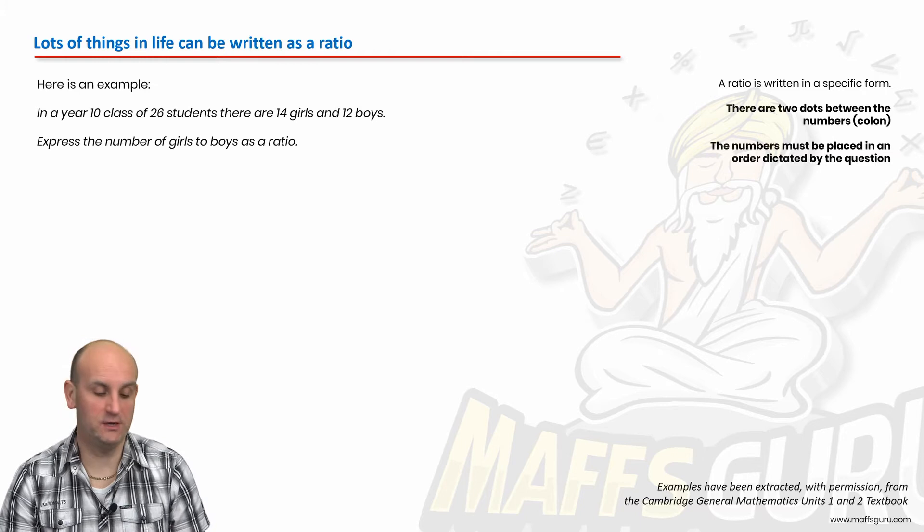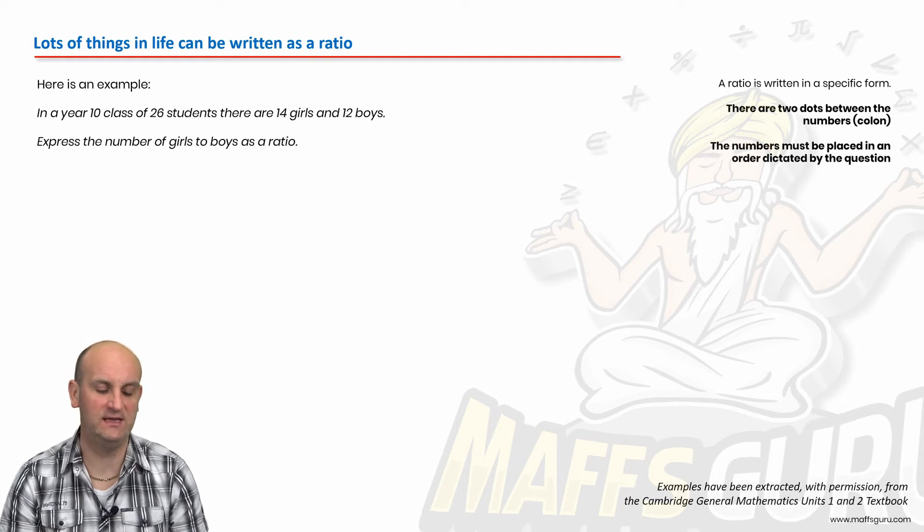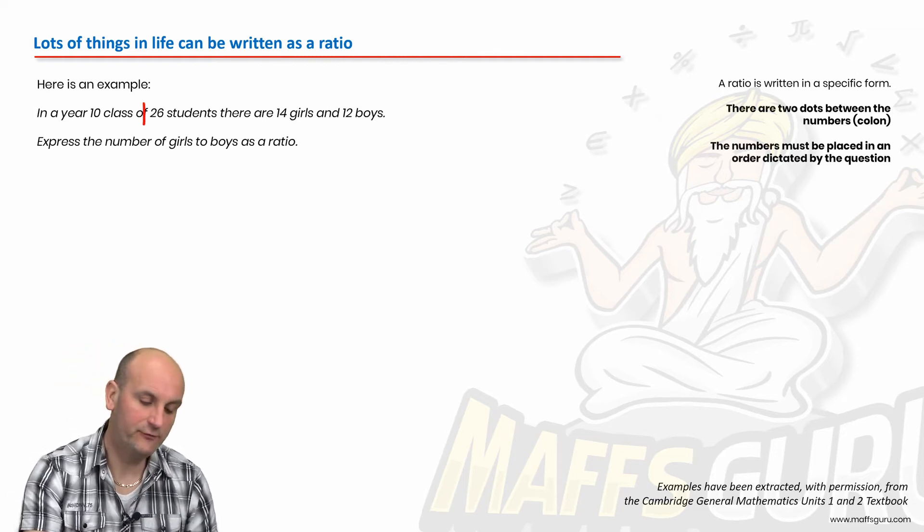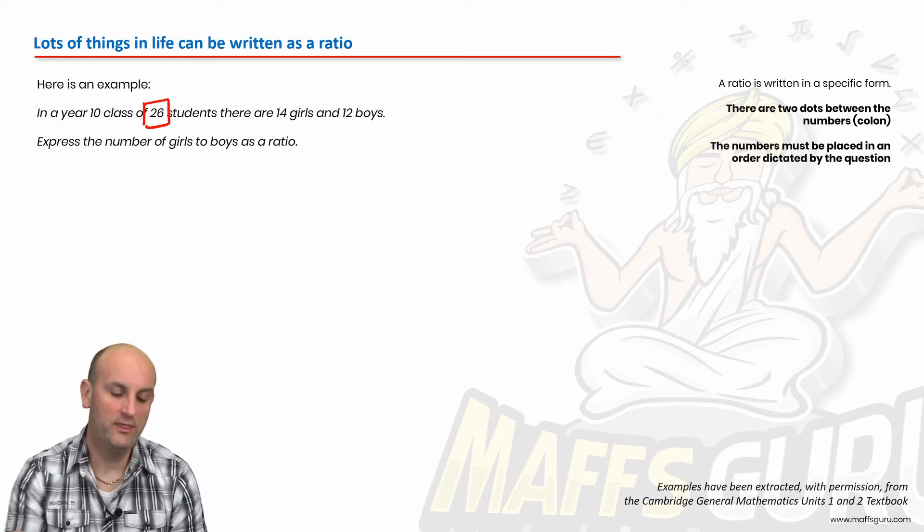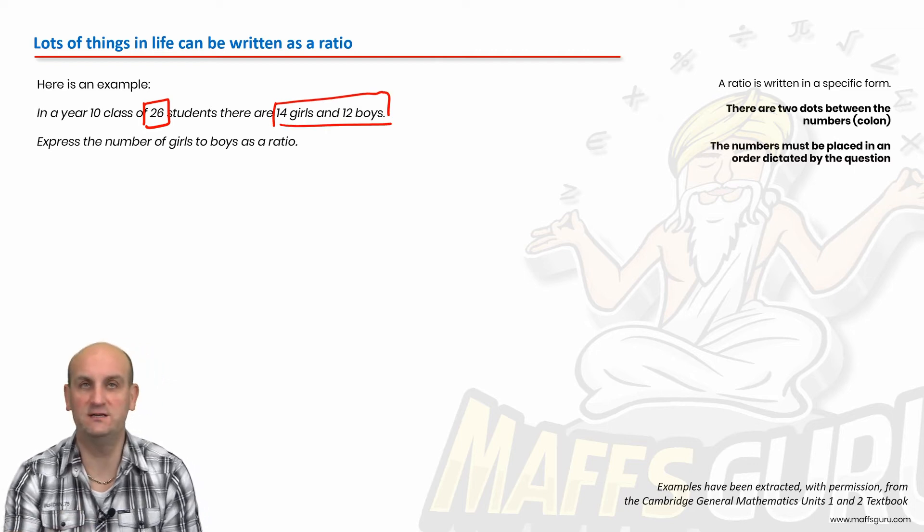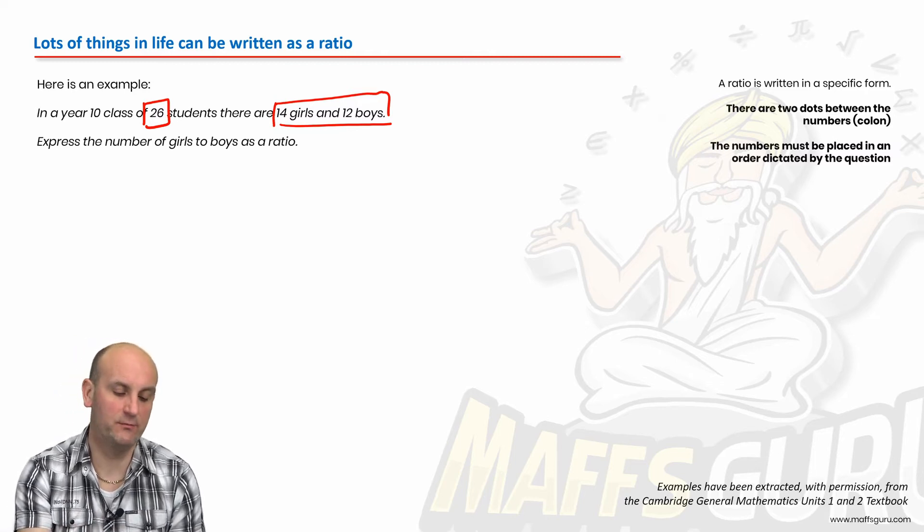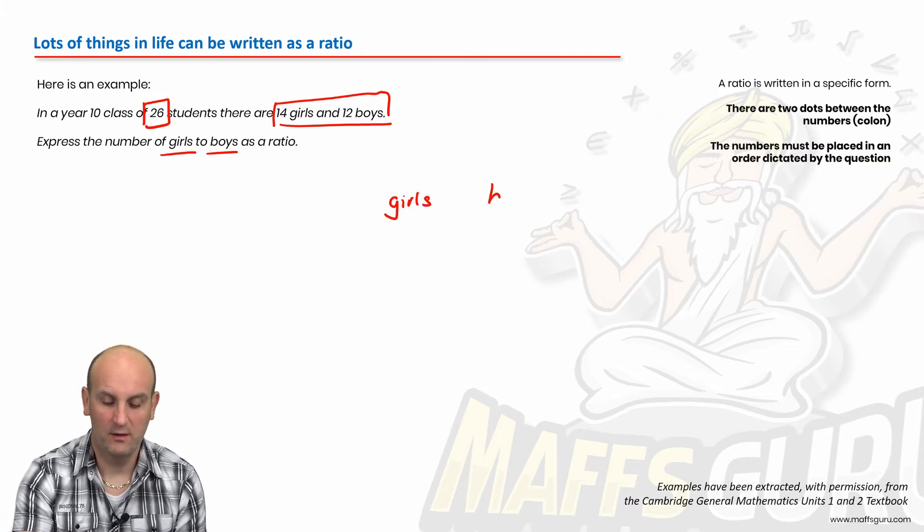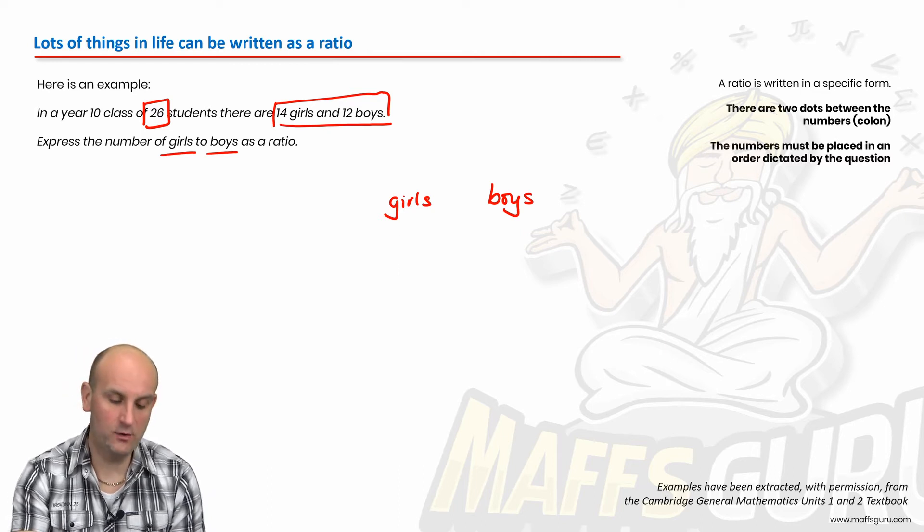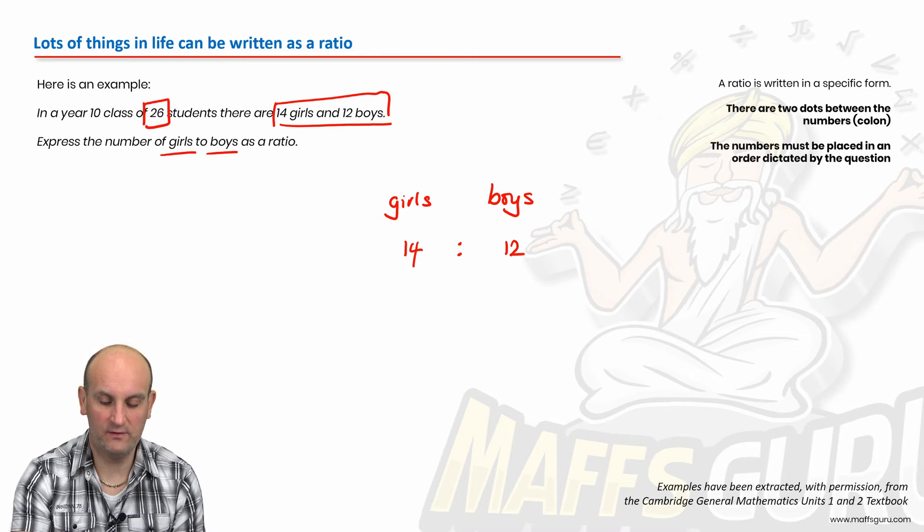Now lots of things in life can be written as ratios. And obviously the most obvious one that you deal with on a day-to-day basis is probably the number of boys and girls in your classroom. So imagine I have a year 10 class of 26 students. Later on, that number of students is going to be very important to you. There are 14 girls and 12 boys. Now first things first, notice the order there. Express the number of girls to boys as a ratio. So the question says it has to be girls to boys. That is the order. I know now that I can write a ratio with two dots in the middle because that's what a ratio is. How many girls do I have? 14. How many boys do I have? 12. And that's the question.